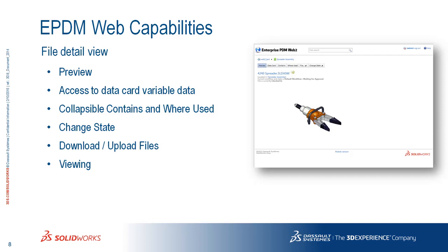When looking at a file, there's preview functionality. You can access the data card to some extent — the properties and data that's there. There is a contains and a where-used. You can do change states on files — that's the workflow participation. You can upload and download files. So if you're on a mobile device and there may not be an embedded viewer, you can download that spreadsheet and open it on your iPad using an iPad app for Excel files.